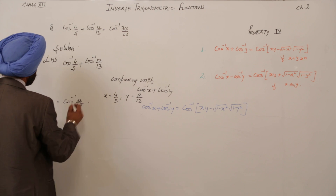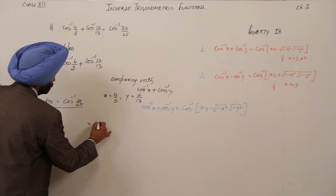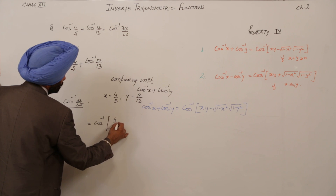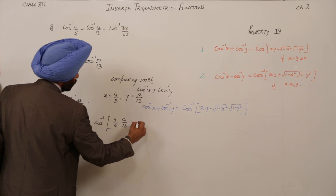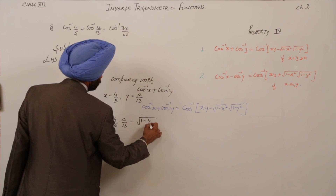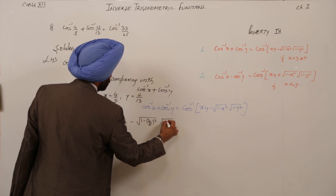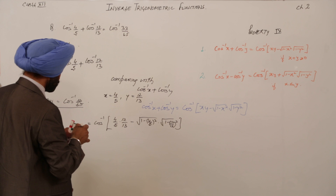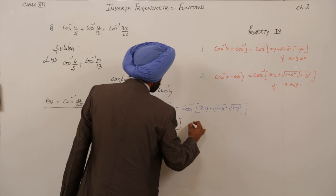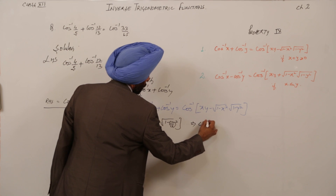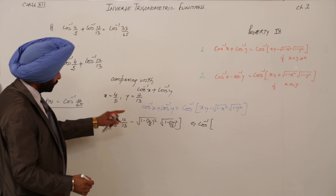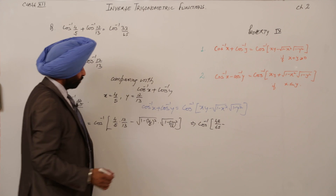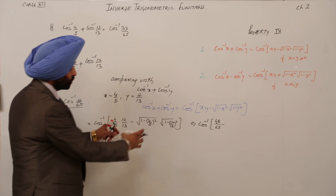We now substitute into the property: cos⁻¹(X·Y − √(1−X²)·√(1−Y²)) = cos⁻¹((4/5)·(12/13) − √(1−(4/5)²)·√(1−(12/13)²)). This is the calculation part where we must be very careful. The product (4/5)·(12/13) gives 48/65. Now we solve the square root terms on the rough side.